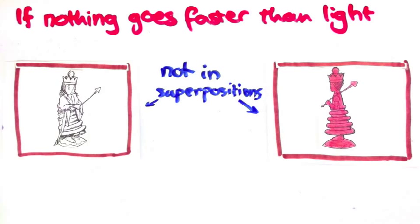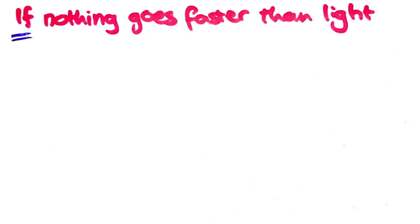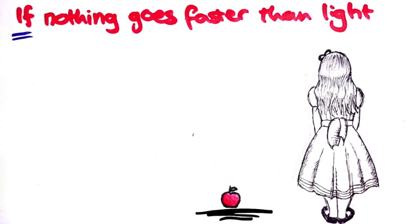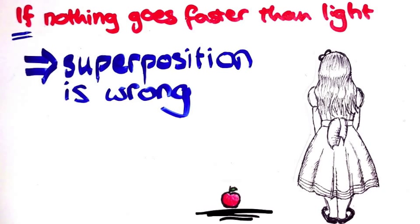So you see, if nothing can go faster than the speed of light, not only is quantum mechanics done for, we can go back to believing that the world isn't doing crazy things while we're not looking. I.e., if particles can't talk faster than light, then superposition is wrong.